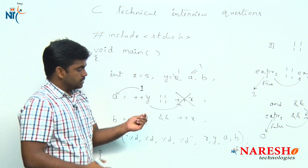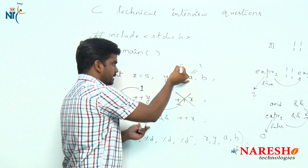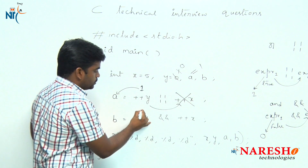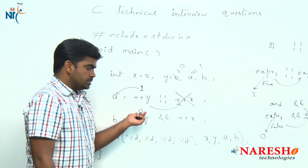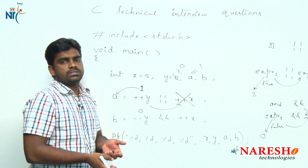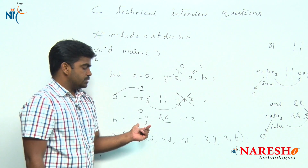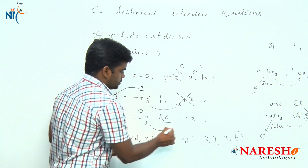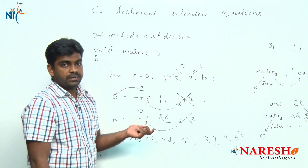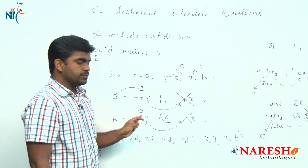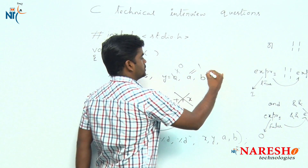Next, control comes to the second expression. --y means y value first decreases and is substituted, so y becomes 0. A value of 0 is false. For the logical AND operator, if the first expression is false, there is no need to check the second expression — the result must be false regardless. So directly it returns false, and b value is 0.